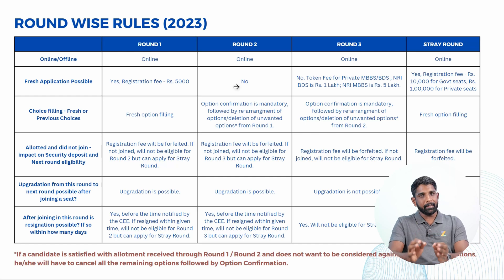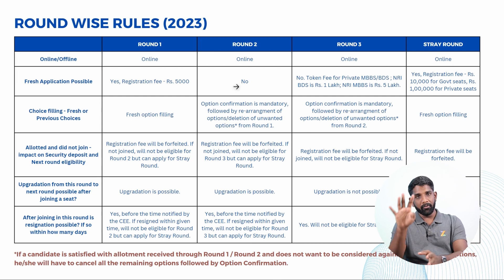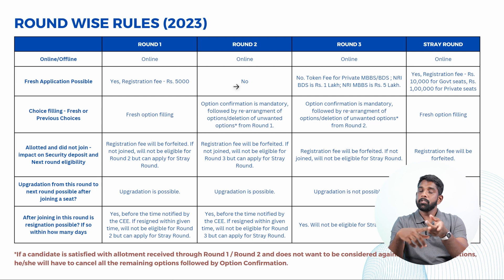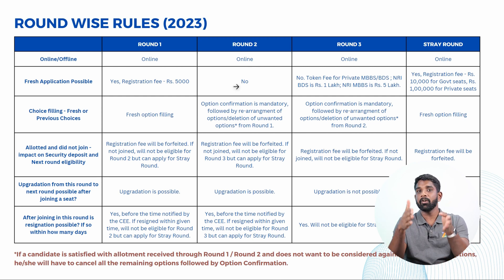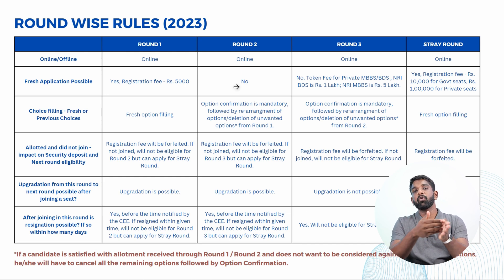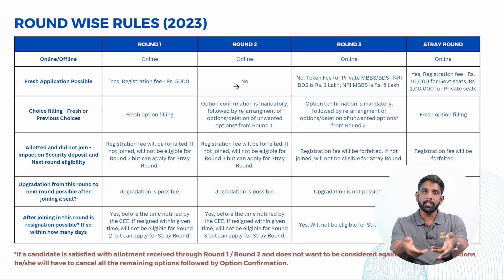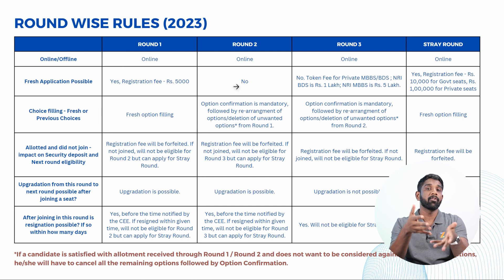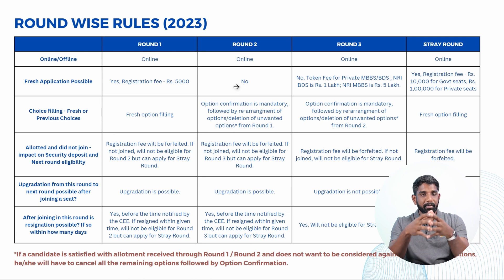Now we look at the round-wise rules for Kerala UG Medical Counseling. In Kerala UG Medical Counseling there are four rounds: Round One, Round Two, Round Three, followed by the Stray Round. A lot of candidates have queries regarding this — whether they have to register for all the rounds, whether registering for one round and paying the fee means it will be refunded if a seat is not allotted.